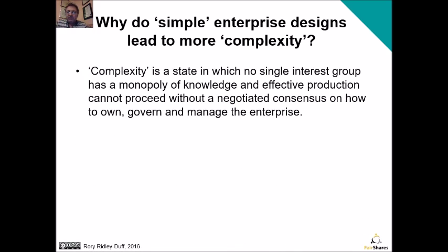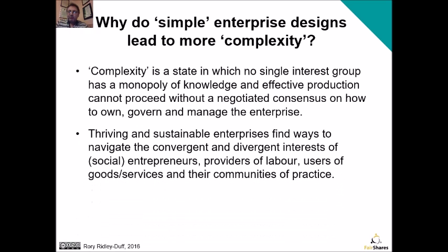Complexity is where you've got several interest groups where none of them have got a monopoly on knowledge. And in order to get things done, you have to negotiate a consensus between them on how to own, govern and manage the enterprise. There's plenty of research evidence that thriving and sustainable enterprises do find ways to navigate how to bring different groups together, but also to manage their divergent interests.